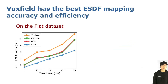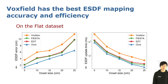Next, we evaluate VoxField's ESDF mapping module. The vertical axis represents the ESDF error. By avoiding the polyline and discretization error, our VoxField shown in blue achieves the best ESDF mapping accuracy. Meanwhile, as you can see in the right figure, VoxField has the fastest ESDF updating speed among the compared methods. Similar results can also be seen on the other three datasets.